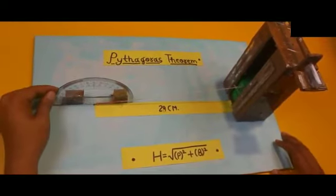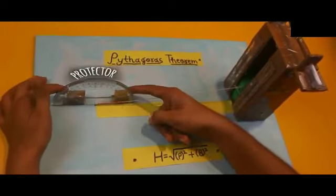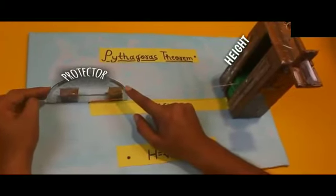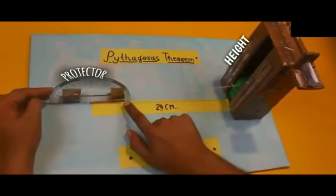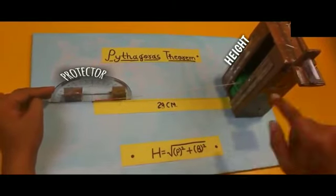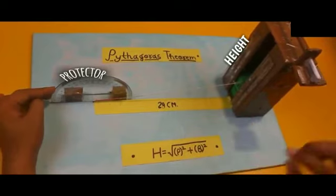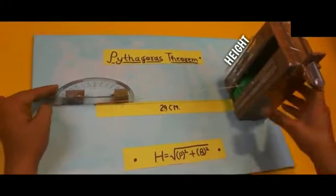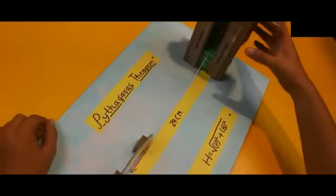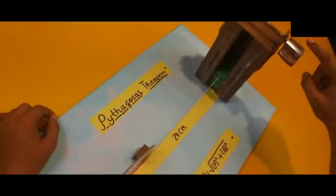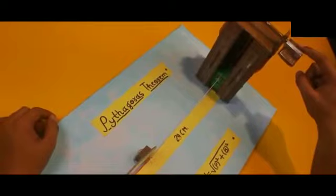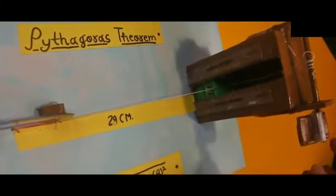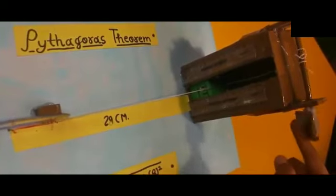So a protractor has been taken so as to get a measure of the angle at what angle the hypotenuse is. Now how can we change the height? This is a metal rod where the plastic part is added with it. We can increase or decrease the height by rotating the metal rod.